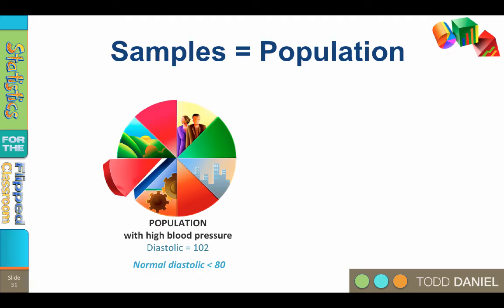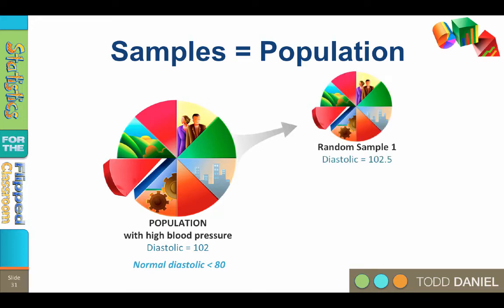Imagine we have a population of people with high blood pressure. The diastolic blood pressure of the population is 102 — a normal diastolic blood pressure is under 80. Diastolic is the bottom number of your blood pressure; systolic is the top number. We draw a sample from that population and expect the sample will have the same high blood pressure as the population. We measure them and sure enough they have high blood pressure, just as we expected. The diastolic blood pressure of the sample is 102.5. We say those numbers are really the same — there was some random variation, but the sample mean represents the population mean plus a little random error. The means are still pretty close, so the variation we see is due to chance.